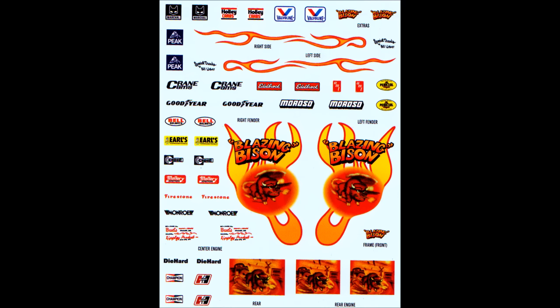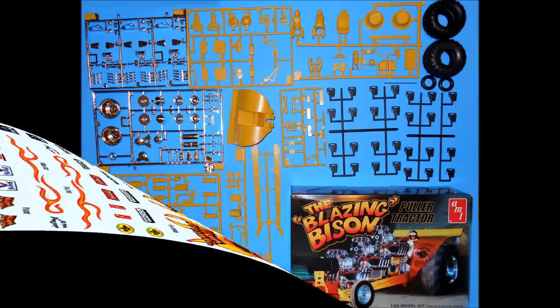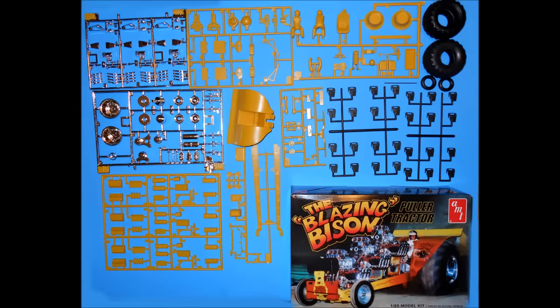Mostly the paints are Tamiya acrylic bottle paints that are shot through an airbrush or rattle can paints that can be used for things like primers. Now here's a bonus. We're going to give you what the other reviewers call an inbox review in 10 seconds or less.